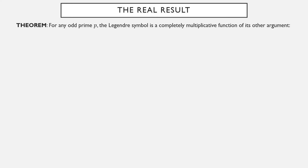Now here's what we really want to prove: for any odd prime p, the Legendre symbol is completely multiplicative as a function of the top argument. In other words, the Legendre symbol mn over p equals the Legendre symbol m over p times the Legendre symbol n over p. Take a moment and observe — we are not talking about fractions. A lot of students look at this and say that's just how fractions work, but if these were simply fractions this would give you a p squared in the denominator. We don't know that the Legendre symbol has this property; we have to actually prove it.